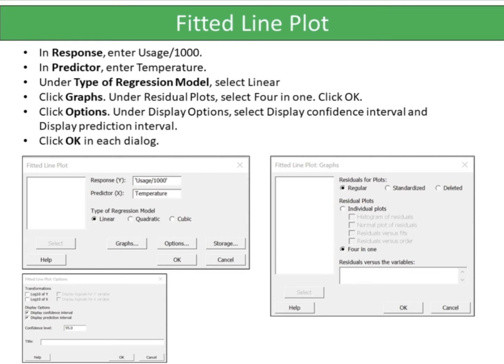Click Graphs. Under Residual Plots, select 4 in 1. Click OK. Click Options. Under Display Options, select Display Confidence Interval and Display Prediction Interval. Click OK in each dialog.